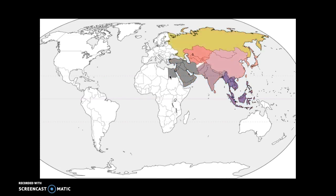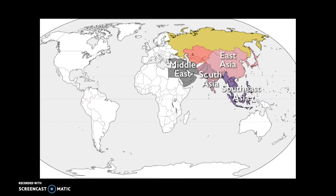Asia can be broken down into the Middle East — sometimes referred to as Southwest Asia, since it's really only 'Middle East' from a Eurocentric European perspective. Then there's South Asia, which is really the Indian subcontinent with India, Pakistan, and Bangladesh; Southeast Asia; East Asia, which is mostly China, Japan, and Korea; Central Asia; and Russia and Siberia. You have to be very careful, because if they ask a question about South Asia and you write about Southeast Asia, you get zero points on the AP test.